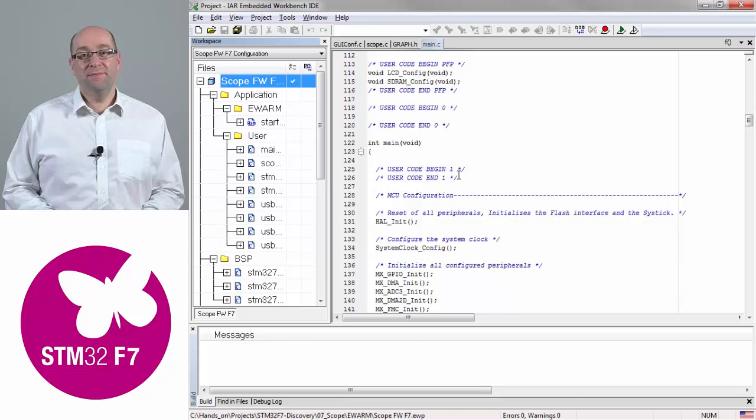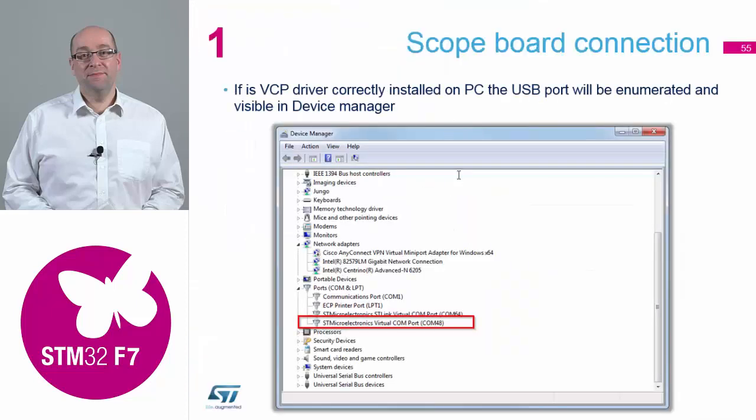So once you've done all that, you should be able to hit F7 and build, download into your board, and then hopefully Microsoft Windows should not park it. You might get unknown device, but it should not park it. And when you connect to Windows, you should gain a second virtual COM port in Windows Device Manager if it's worked correctly. You'll have one virtual COM port which is the ST-Link, and you should gain a second virtual COM port which is your micro USB connector, if everything has worked correctly.